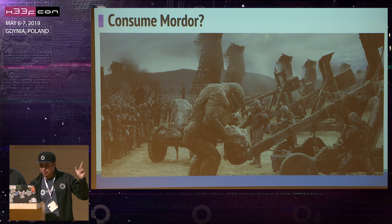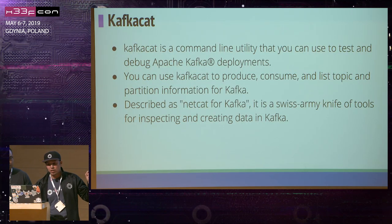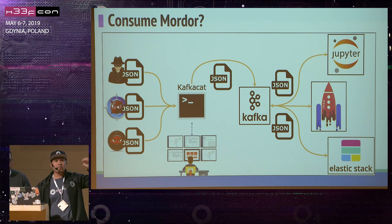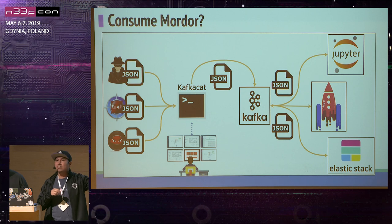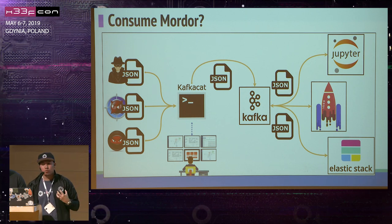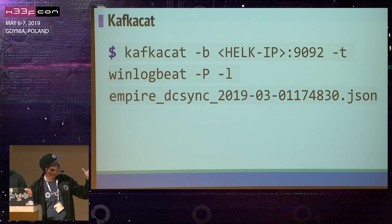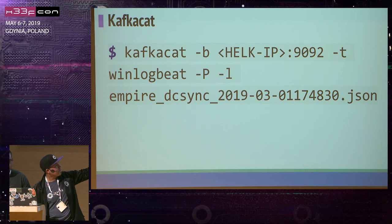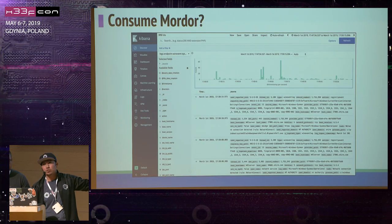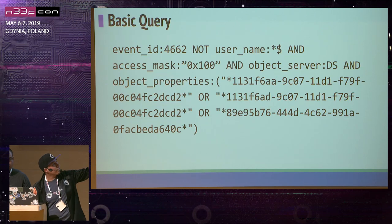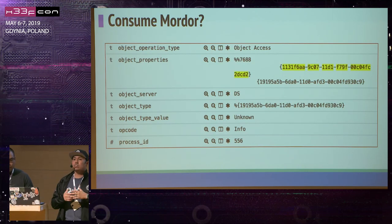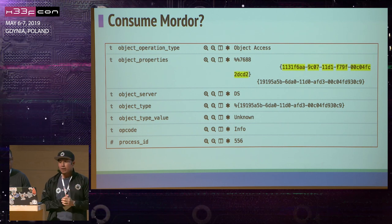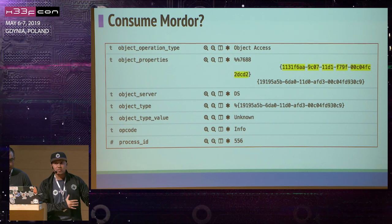You can consume Mordor data via kafkacat — a tool that lets you grab the JSON files, push them into a Kafka broker, and then use it with Elasticsearch, Jupyter notebooks, or any other application that can consume that data. It's as easy as pointing kafkacat to a Kafka broker, specifying a port, a specific topic in producer mode, pointing to the specific JSON file we share, and you'll have data in two seconds. You can run a query on that data and find whatever the DCSync-type attack generated.